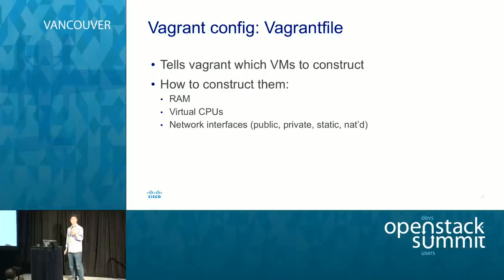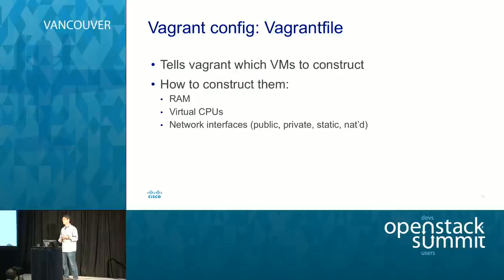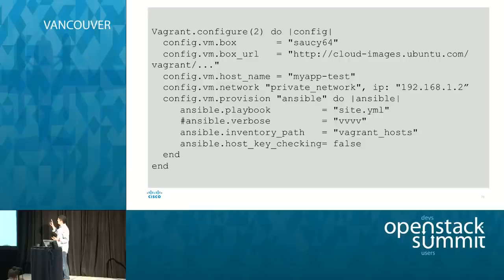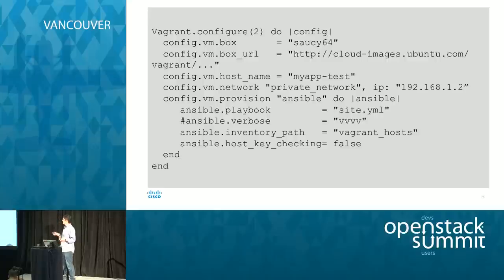Vagrant uses a Vagrantfile for configuration, written in Ruby. You can tell Vagrant within the Vagrantfile to construct instances with a certain amount of RAM, a certain number of CPUs, specify network interfaces — public, private, and additional interfaces. Here's an example of a simple Vagrantfile: at the top we're creating a virtual machine using an Ubuntu Trusty 64 image, providing a URL for where it can download the machine image, giving it a hostname, specifying a private network IP address. Then in the next block we kick off Ansible, specifying the playbook path, verbosity level, a path to the inventory file, and whether or not to do host key checking.